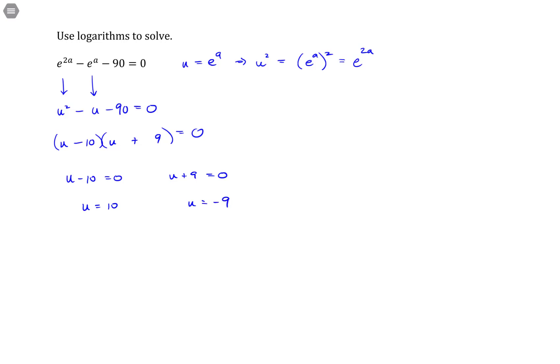But I'm not solving in terms of u, I'm solving in terms of the variable a. So that means I have to go back to my original substitution and say this means e to the a is equal to 10, and e to the a is equal to negative 9. And I apologize that my lowercase a's often look like 9's.